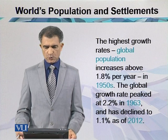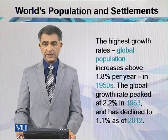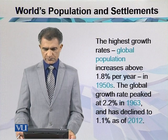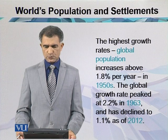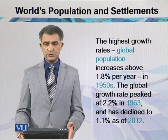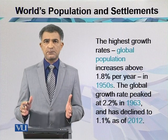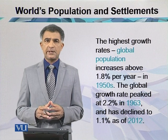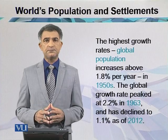The global growth rate peaked at 2.2 percent in 1963 and has declined to 1.1 percent as of 2012. That highest growth rate of 2.2 percent in the 20th century was why, in the 1970s, one billion people were added in just 12 years — because of the maximum growth rate of the world population at that time.